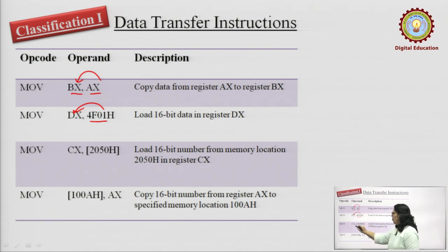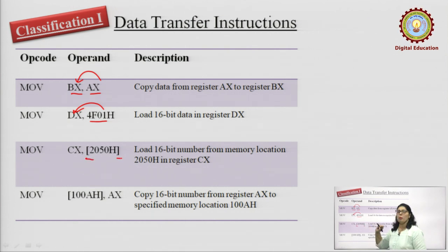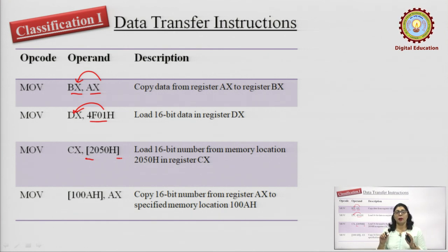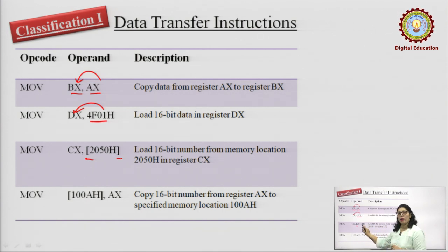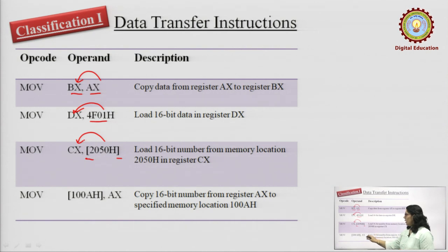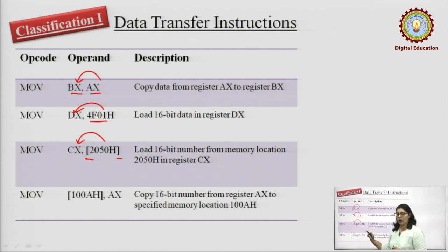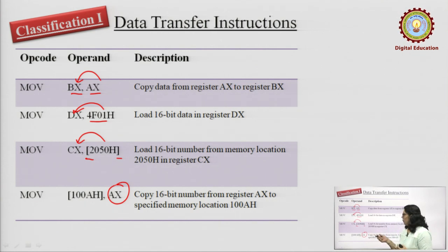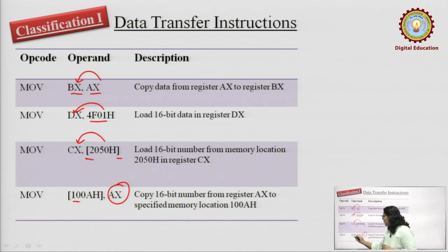The next example is MOV CX, [2050h]. Since 2050h is inside brackets, it means 2050h is a 16-bit address — that memory location's data is being stored into the CX register. Similarly, the other way around: MOV [100Ah], AX. Here, whatever 16-bit number is in the accumulator AX is being saved into the memory location represented by 100Ah.